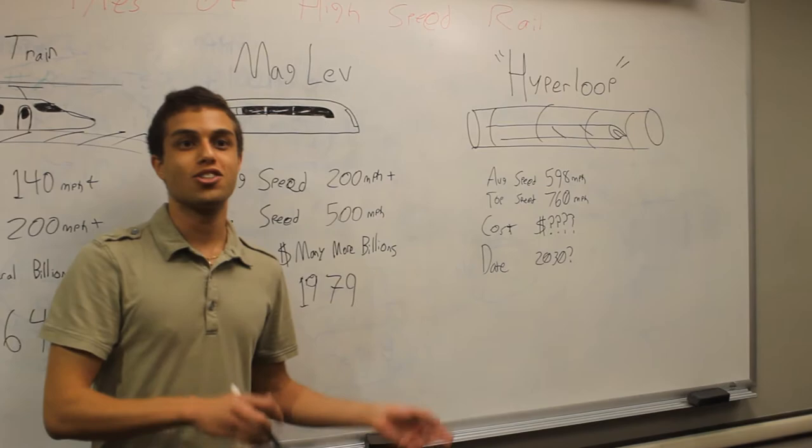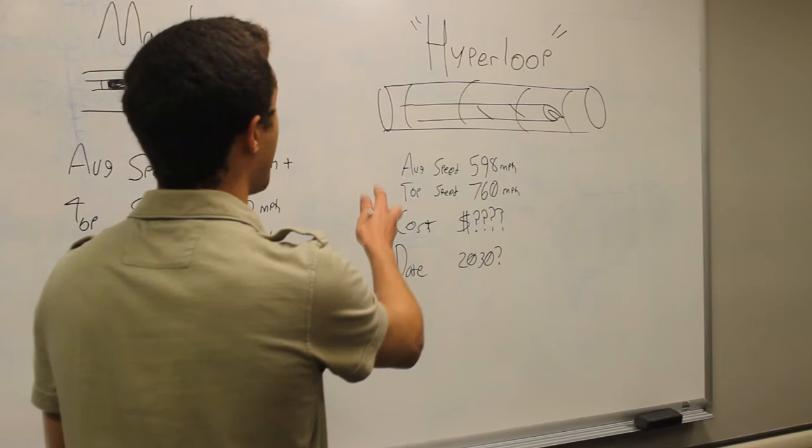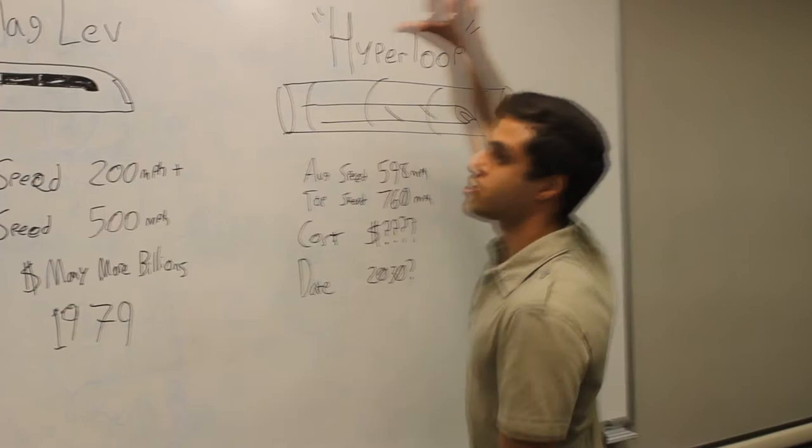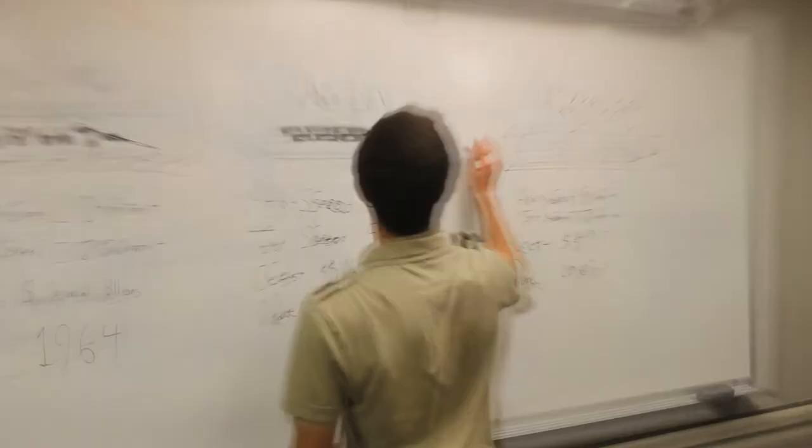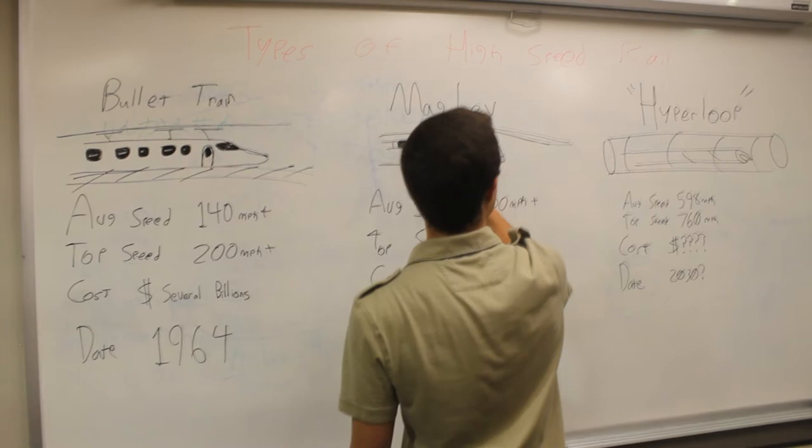Remember, the Hyperloop is just theoretical science as it stands right now. So it's not a reality, something we can use, that you can go in and actually take right now. What the Hyperloop is, it works in a contained cylinder. As comparison to the Maglev and the Bullet Train, they have to run and cross through air, so they have to be aerodynamic.